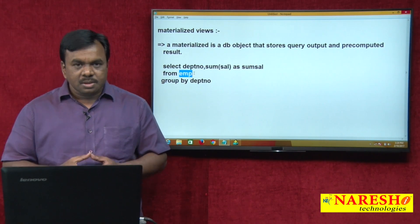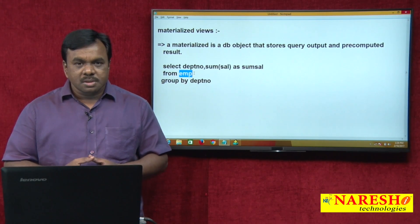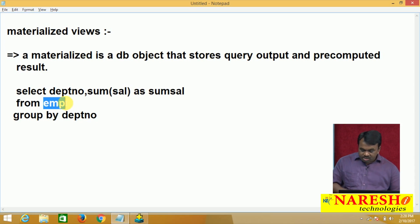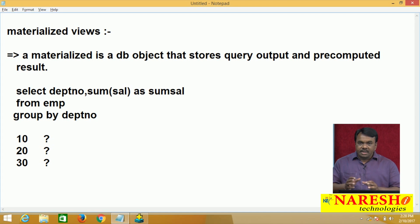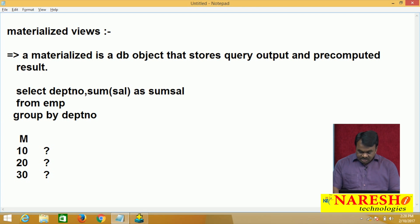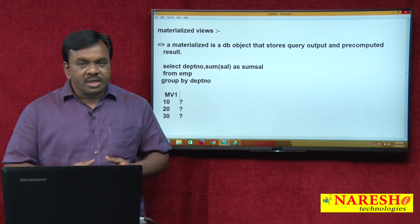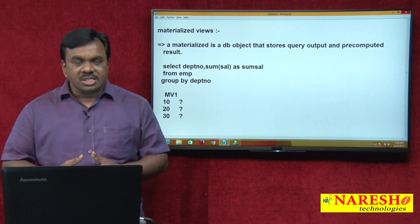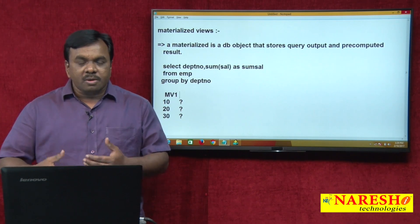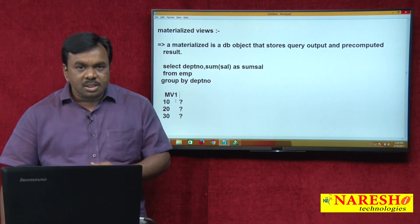To improve the performance of this query, I will do one thing. First, I will execute this query and store the output in one object. For example, this query returns department-wise total salary — 10th department total salary, 20th department total salary, 30th department total salary. I will store this query output in an object, let us say mv1. Next time, whenever I want to calculate department-wise total salary, I do not need to go to the table — I simply go to mv1.